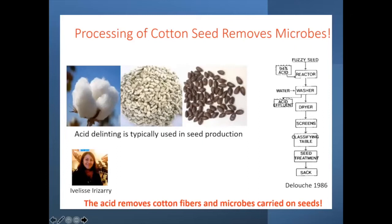Because endophytes are frequently seed-transmitted, you have to be careful about how you treat seeds. Anything that kills or even reduces the microbes on seeds is a problem because plants need a certain level of microbes to grow properly. For example, with cotton seeds, we treat them with acid — it's called acid delinting. We soak them in concentrated sulfuric acid to digest away the fibers, but it also kills the bacteria on the surface of the cotton seed.